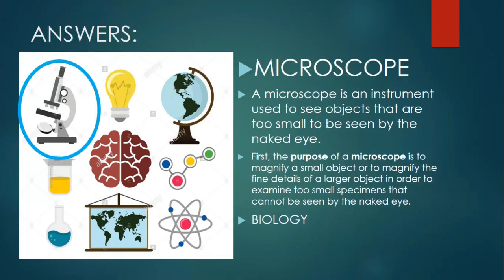First one is a microscope. A microscope is an instrument used to see objects that are too small to be seen by the naked eye. First, the purpose of a microscope is to magnify a small object or to magnify the fine details of a larger object in order to examine small specimens that cannot be seen by the naked eye.